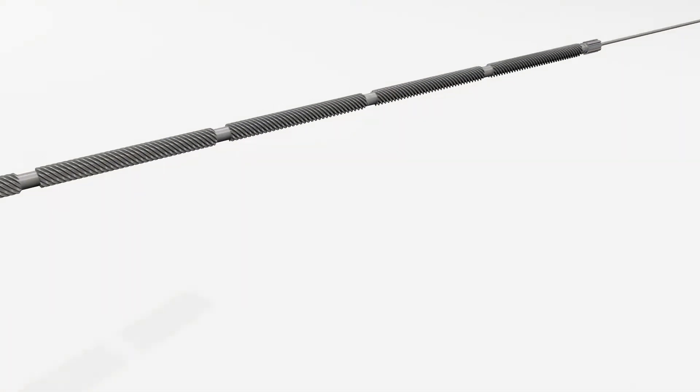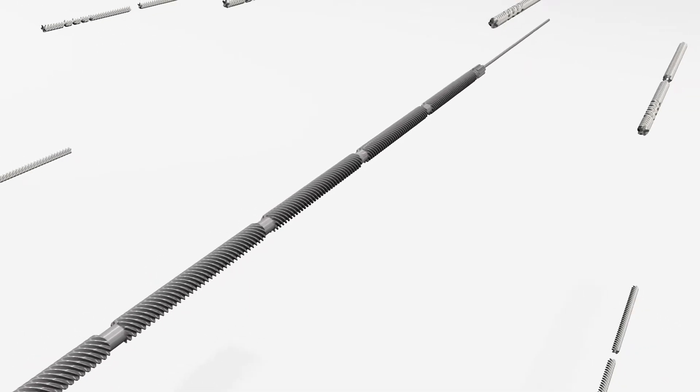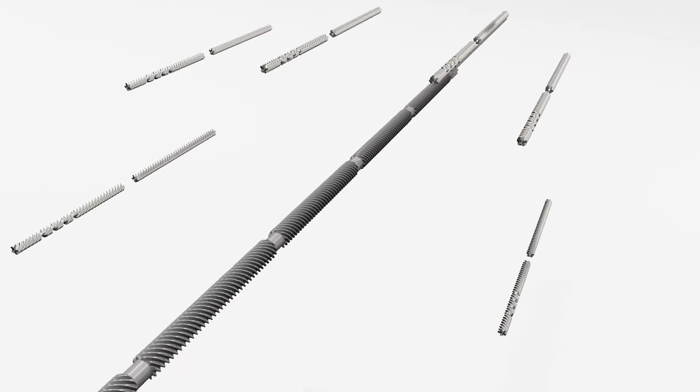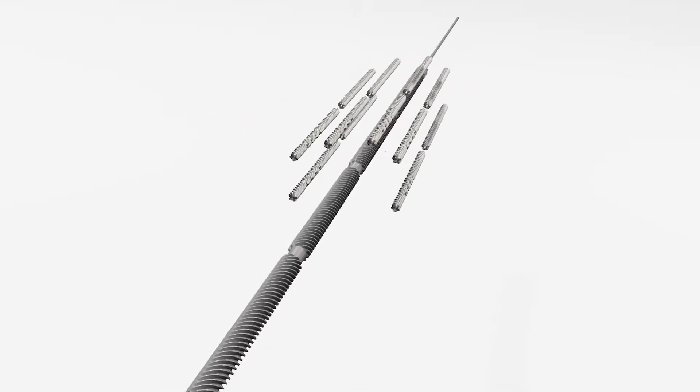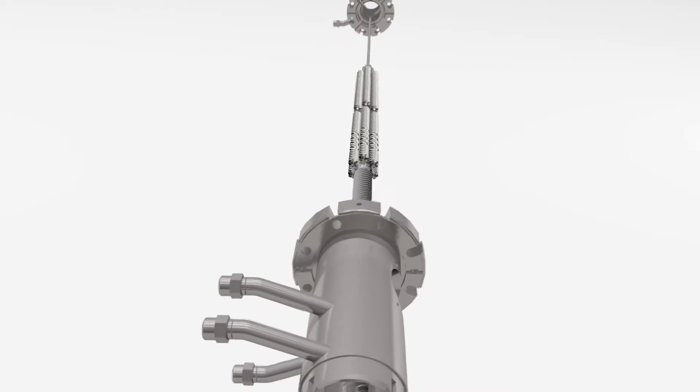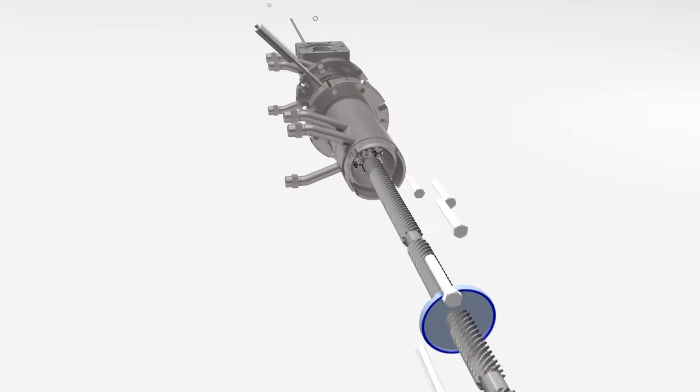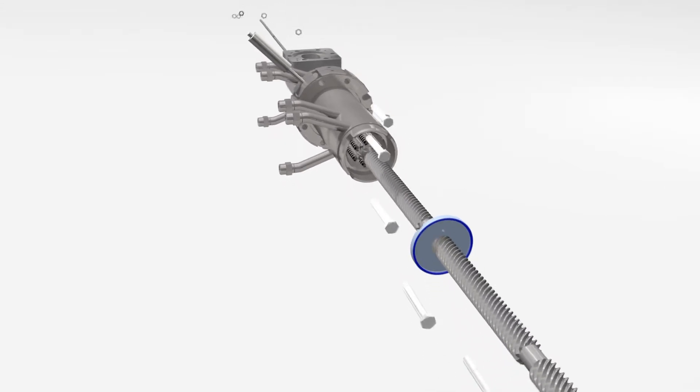At the planetary roller extruder a temperature controlled central spindle is driven, on which the individual and in their number variable planetary spindles roll off. The rotating planetary spindles are additionally led via an internally toothed liner, which is enclosed by a roller shell.